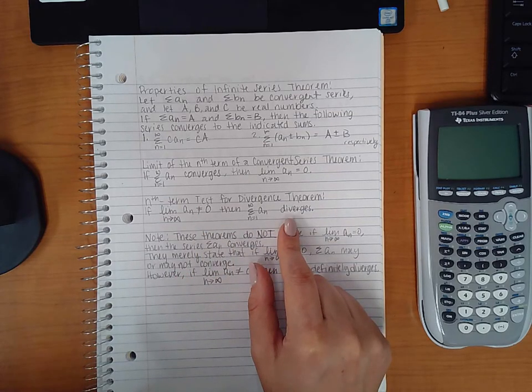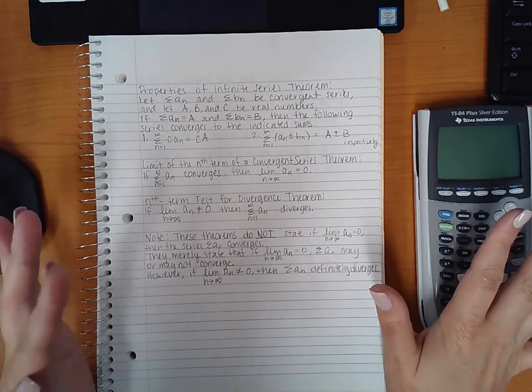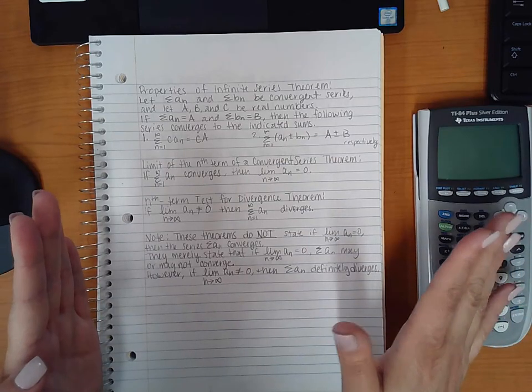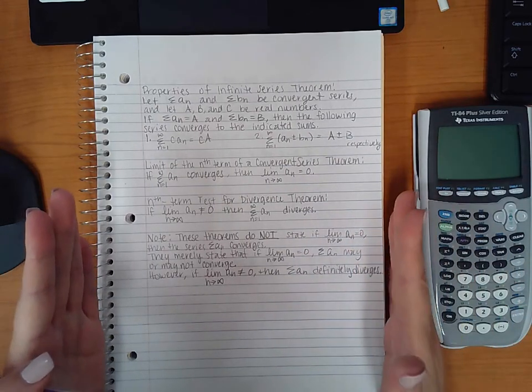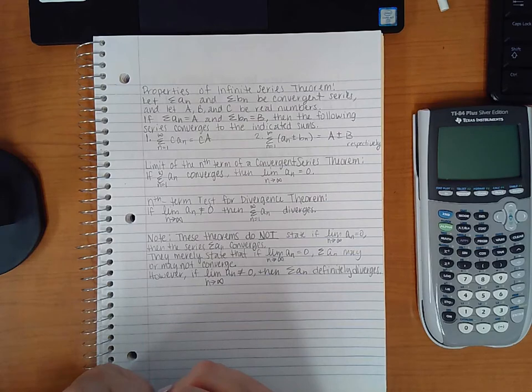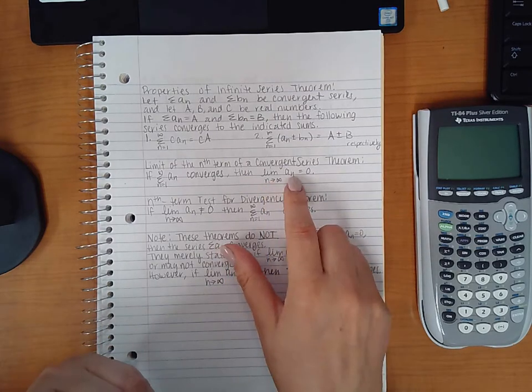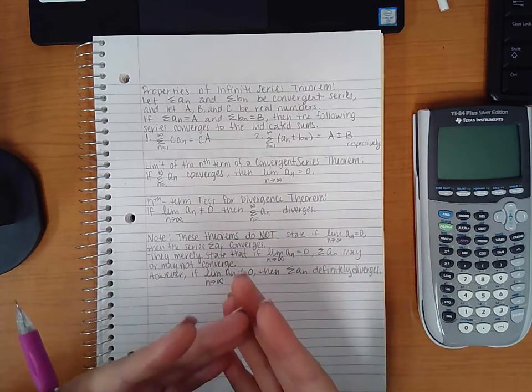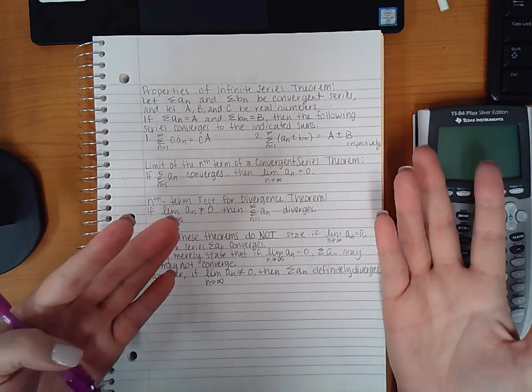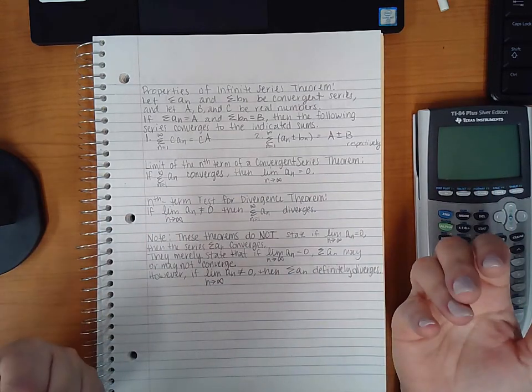And you don't have to apply any of those methods that we're going to continue to go over. However, if you take the limit of the nth term and you get zero, then that's going to tell you that you do need to continue on with trying one of the methods that we learned from here on out.